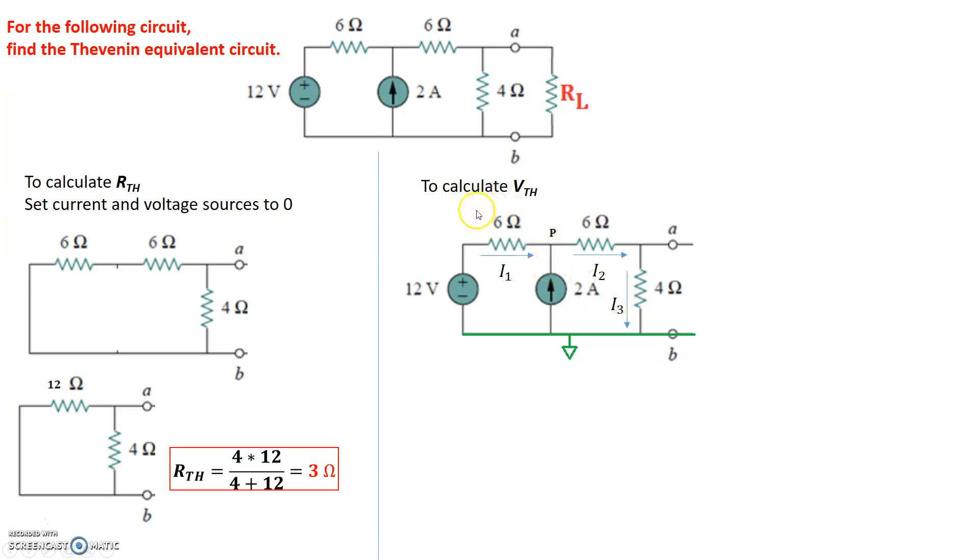Next thing we'll do is Kirchhoff's current law at node P and then Kirchhoff's current law at node A. Let's start with node P. Kirchhoff's current law at node P says the current going in into node P is equal to I1 and 2 amps. So I1 plus 2 amps is equal to the current going out, which is I2. I1, the voltage on the tail end of I1 is 12 volts and the other side is node P. So 12 minus Vp divided by 6 is I1 plus 2 equals I2, which is Vp minus Va divided by 6. If we rearrange the terms, we end up with the following expression. Here's our first expression from node P.